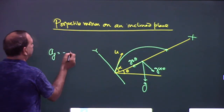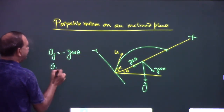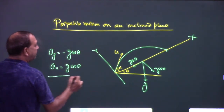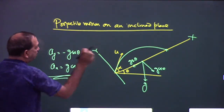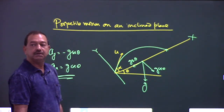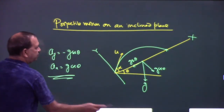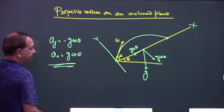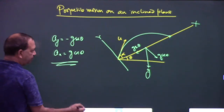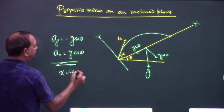ay is equal to minus g sinθ, ax is equal to g cosθ. Which equations to use? Use them and everything will come — x is equal to ux·t plus...